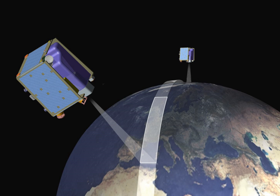and one or more space stations, which may include links between space stations, in which information relating to the characteristics of the Earth and its natural phenomena, including data relating to the state of the environment, is obtained from active sensors or passive sensors on Earth satellites. Similar information is collected from airborne or Earth-based platforms.